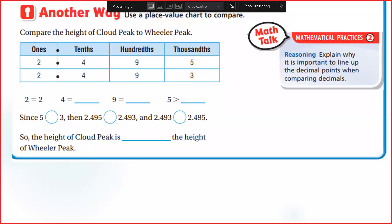Here you can use another way — it's the same. Just write them on the place value chart. Two equals two, four equals four, nine equals nine, five is greater than three. So since five is greater than three, 2.495 is greater than 2.493, and 2.493 is less than 2.495. That means the height of Cloud Peak is greater than Wheeler Peak.